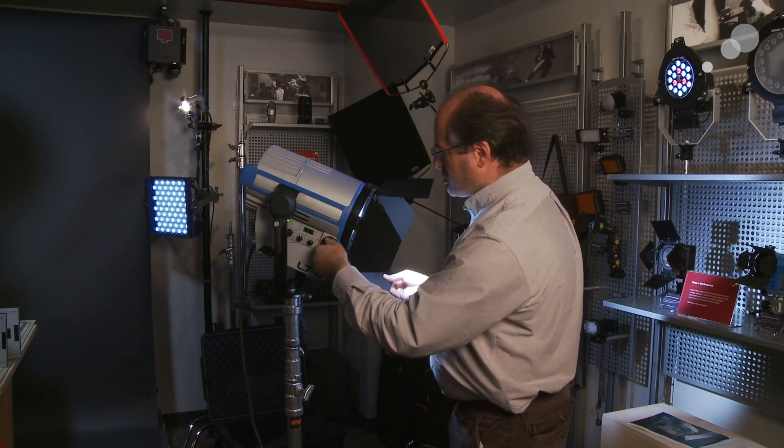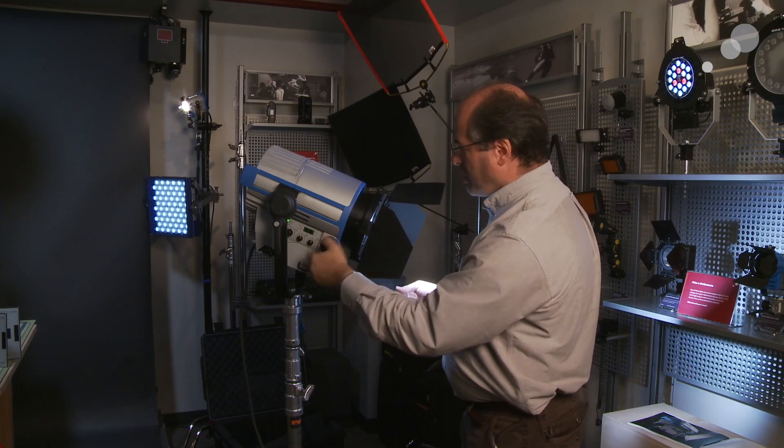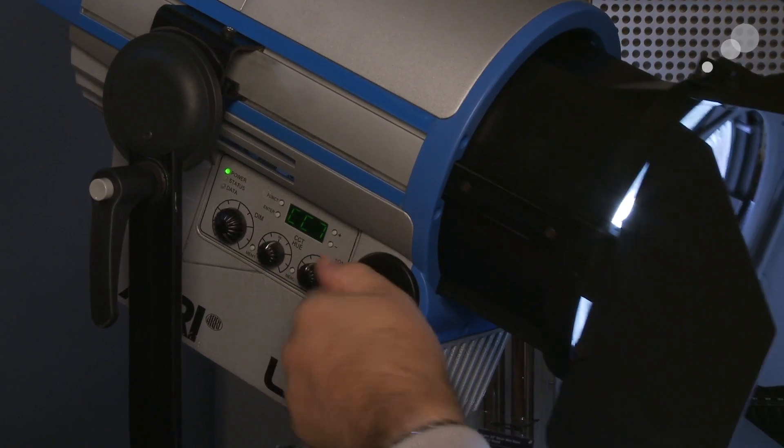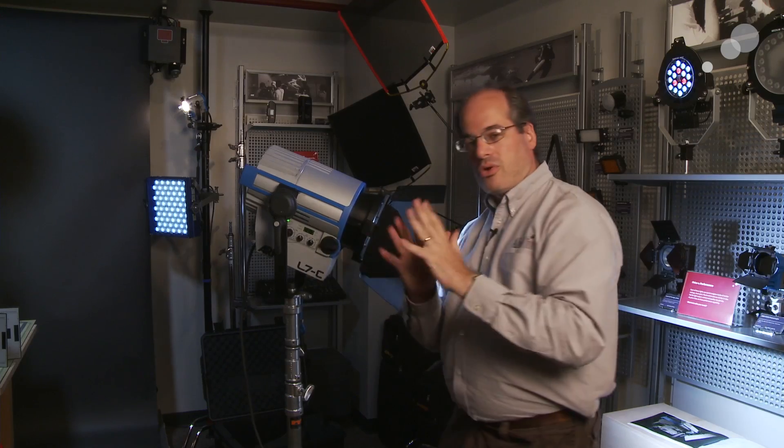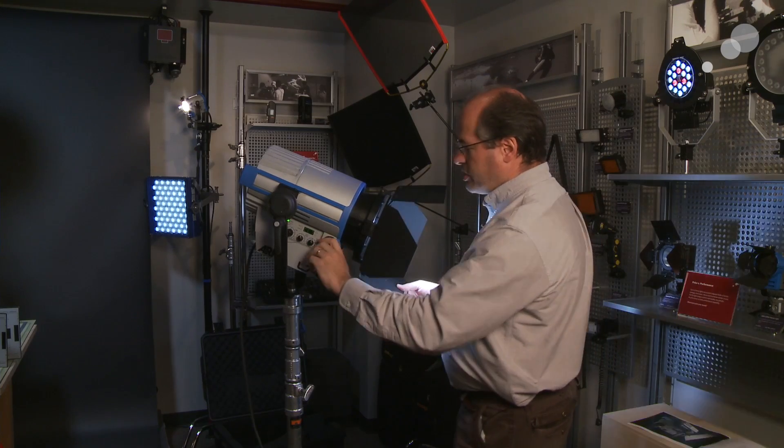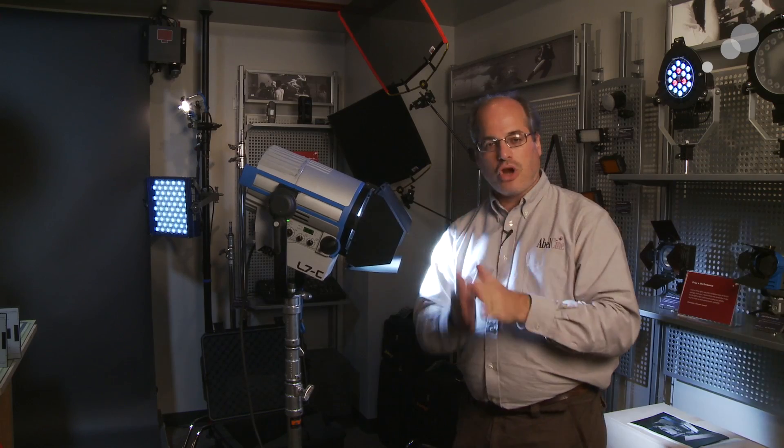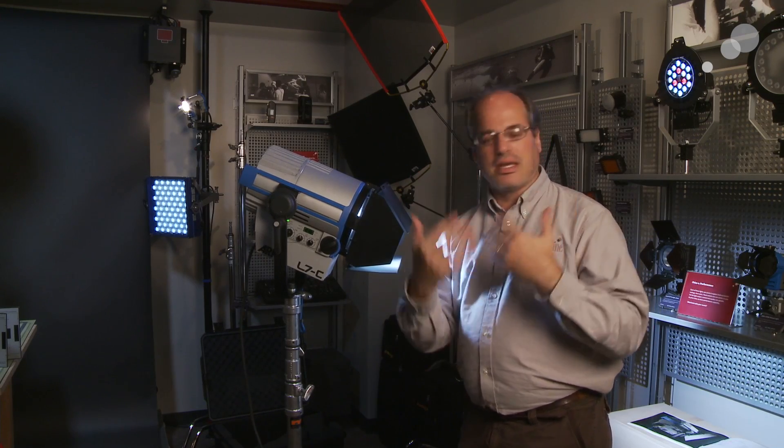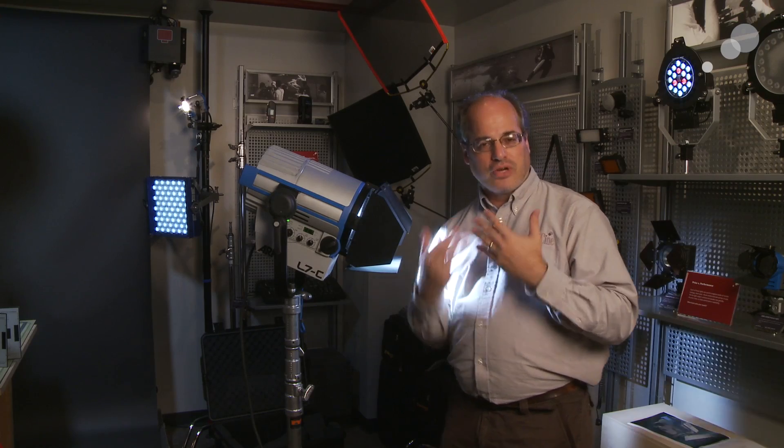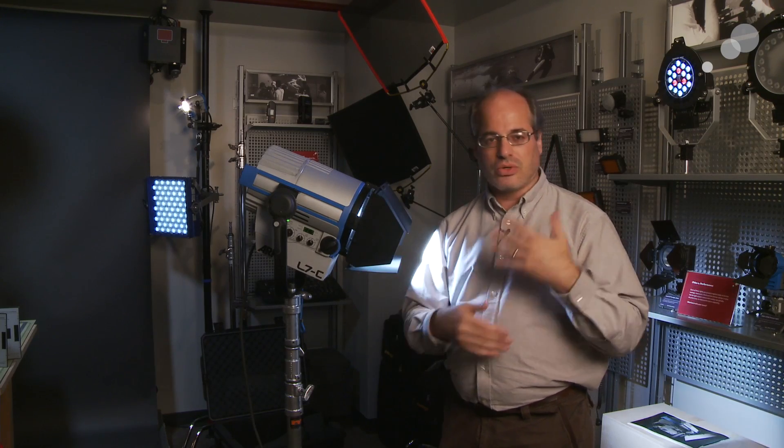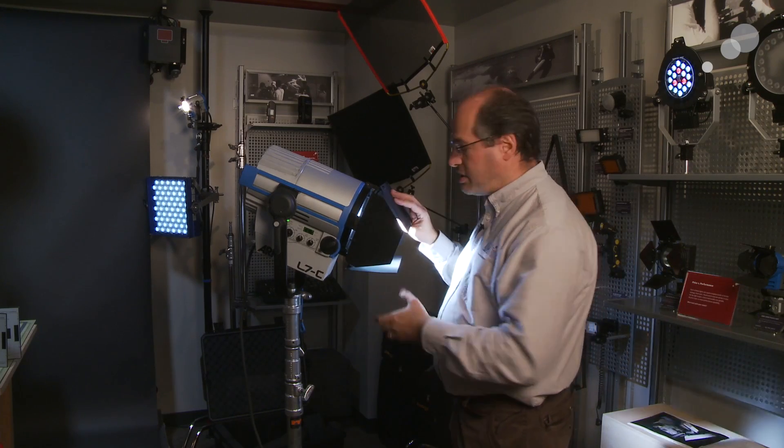You have first and foremost, with the Fresnel lens, I can adjust from 15 to 50 degree angle beam spread, and in doing so, I also have my barn doors to get a nice, sharp, clean cut. It's what you would expect out of a regular Fresnel light, whether it's tungsten or daylight, but now it's an LED source.